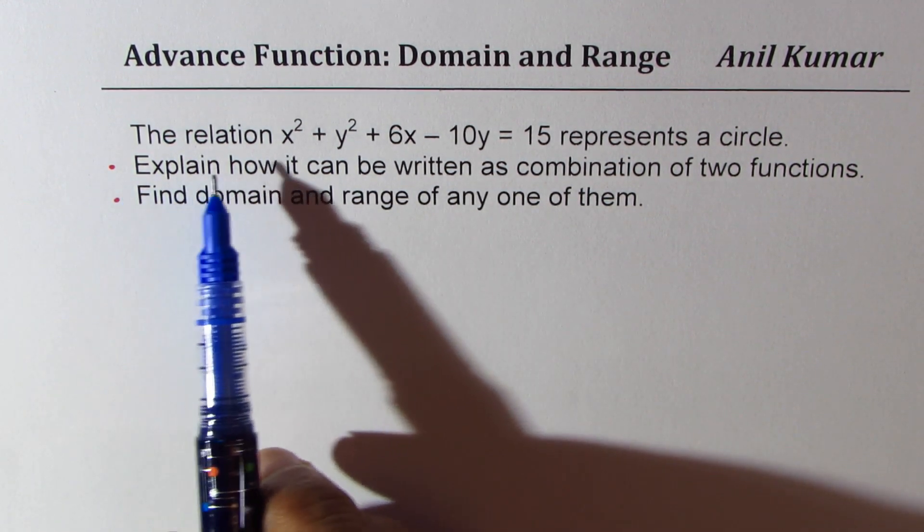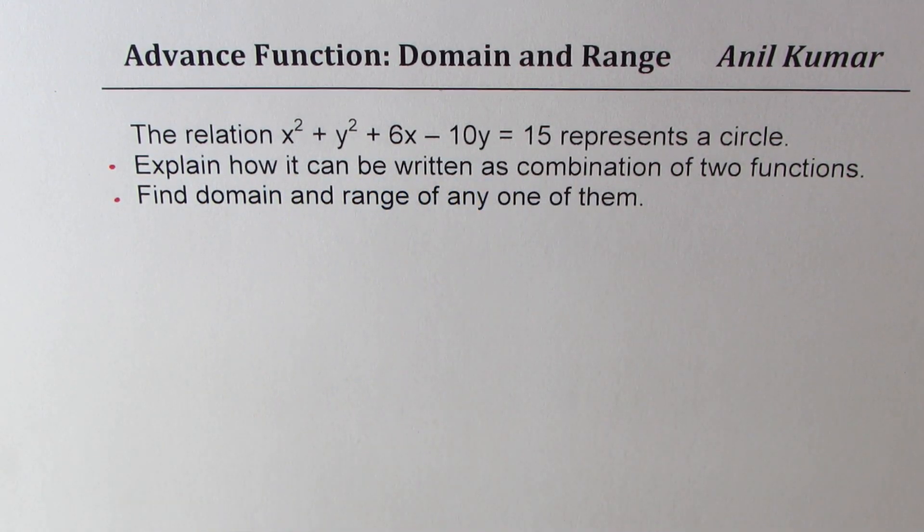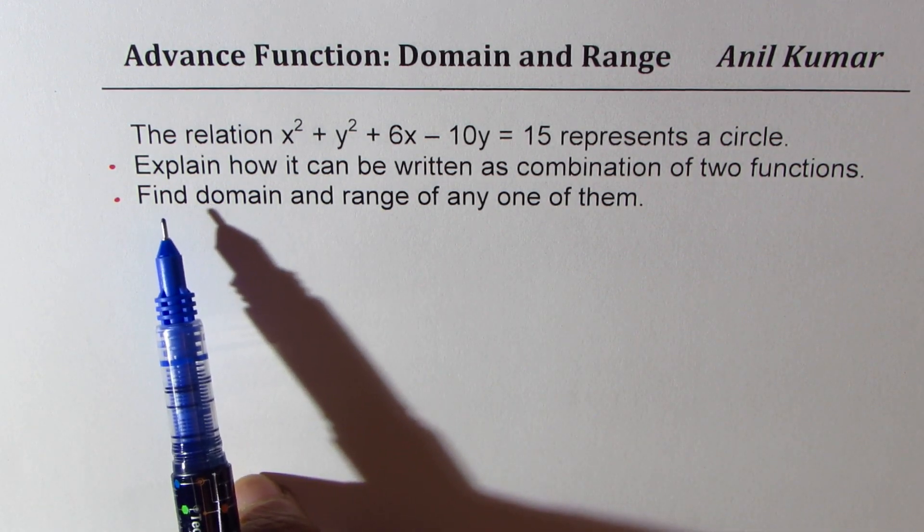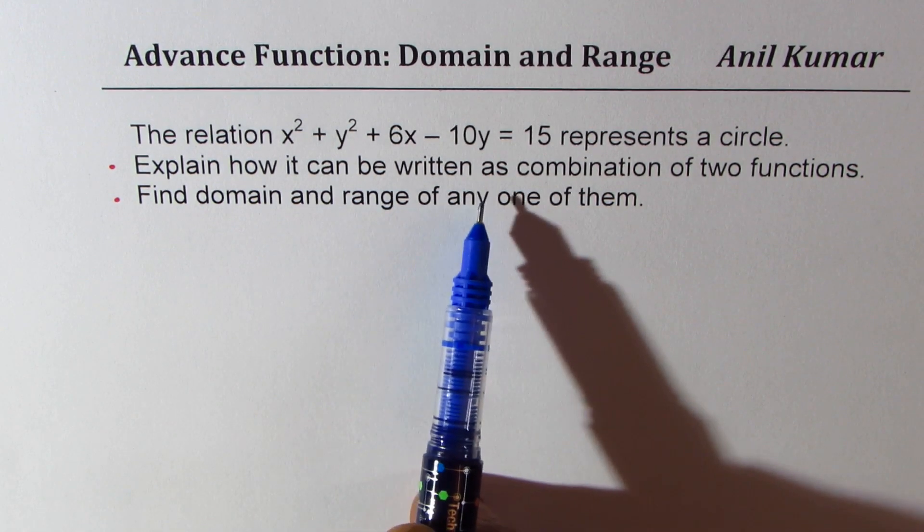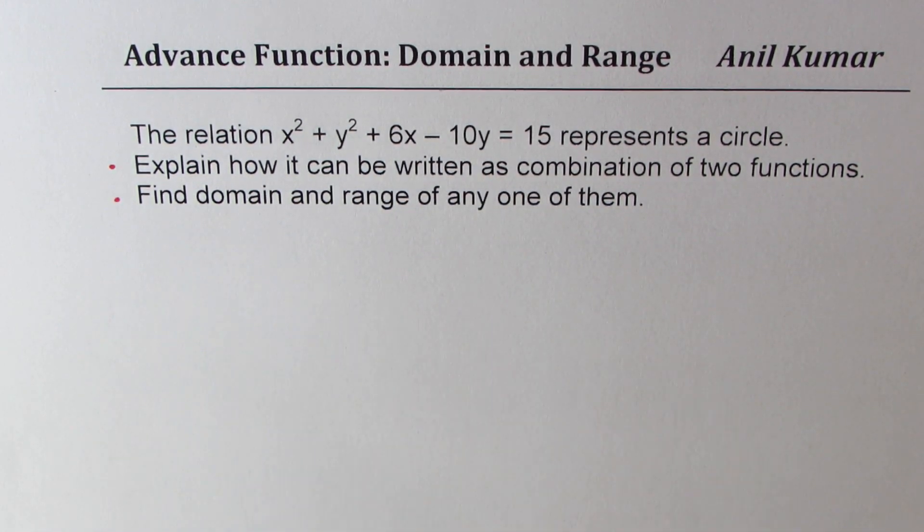We'll look into the relation x squared plus y squared plus 6x minus 10y equals 15, which represents a circle. You need to explain how it can be written as combination of two functions and then you need to find domain and range of any one of them.